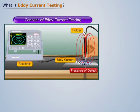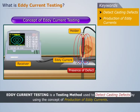Thus Eddy current testing is a testing method used to detect casting defects by using the concept of production of Eddy currents.